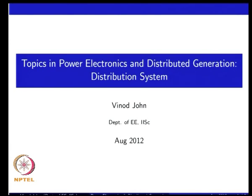Welcome to class 5 on topics in power electronics and distributed generation. We have been discussing models of components of the distribution system — the transformer model, the line, DG models — and now we are looking at models of protection equipment: fuse, reclosers, sectionalizers, and starting to look at the circuit breaker and its inverse current characteristics.